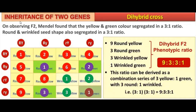On observing the F2 generation, Mendel found that the yellow and green color segregated in a 3:1 ratio. Round and wrinkled seed shape also segregated into a 3:1 ratio, and totally we got a 9:3:3:1 ratio. The dihybrid F2 phenotypic ratio is 9:3:3:1.